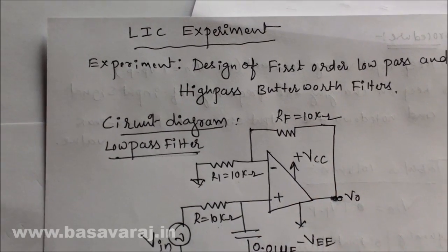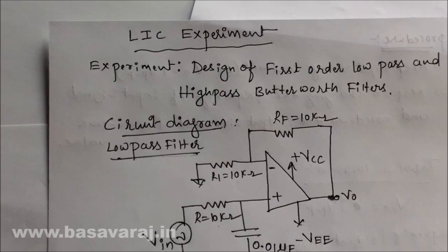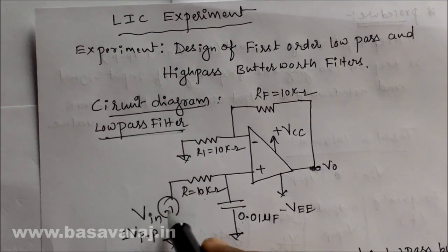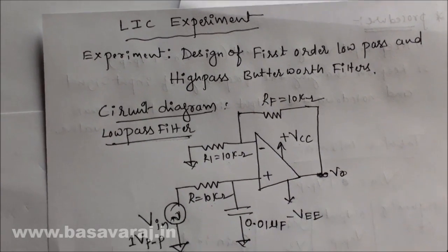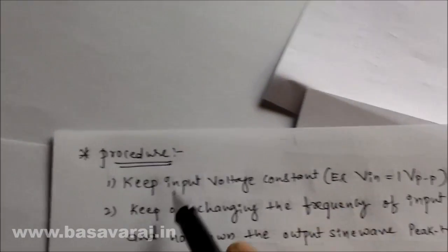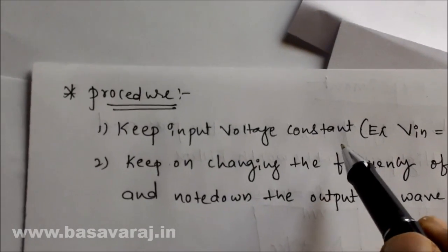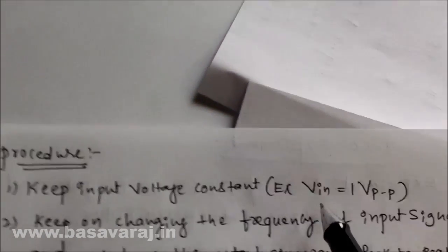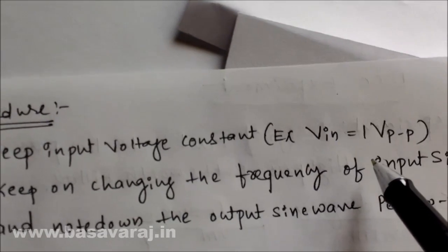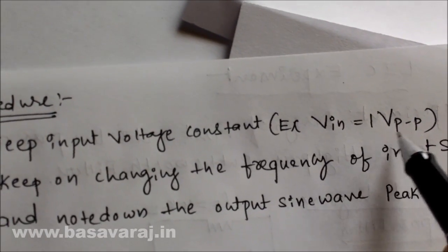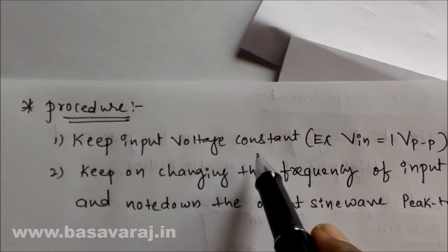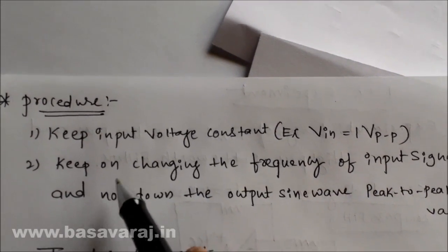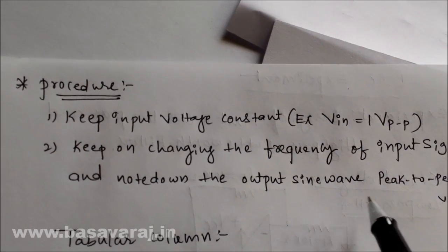After connecting all resistors, capacitors, and the op-amp on a breadboard, the next step is to measure the output. We provide a sine wave as the input and measure the output. Keep the input voltage constant — for simplicity, we take the input voltage as 1 volt peak-to-peak. Then we change the input signal frequency and note down the output sine wave peak-to-peak value.